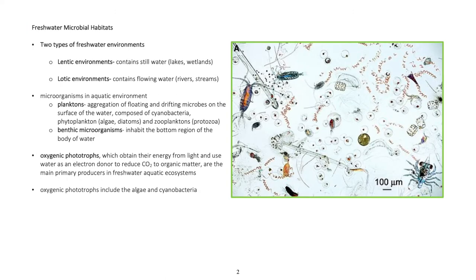Freshwater microbial habitats include two types of freshwater environments: lentic environments, which contain still water such as lakes and wetlands; and lotic environments, which contain flowing water such as rivers and streams. Microorganisms in the aquatic environment include planktons.